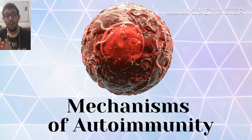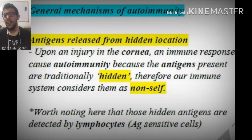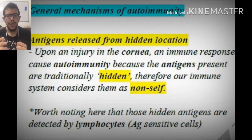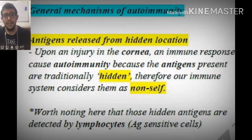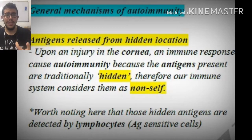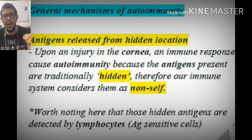During this lecture, we'll be talking about the general mechanisms of autoimmunity. First of all, let's talk about antigens released from hidden locations. There are certain locations within our body that are not going to be really exposed to antigen-presenting cells. Therefore, these antigen-presenting cells are not going to be identifying the antigens present within the cells or tissues of these locations. An example is the cornea, which is generally hidden, and whenever a problem occurs and cells or certain antigens are released, the antigen-presenting cells are going to trigger an immune response against these cells as if they were foreign.